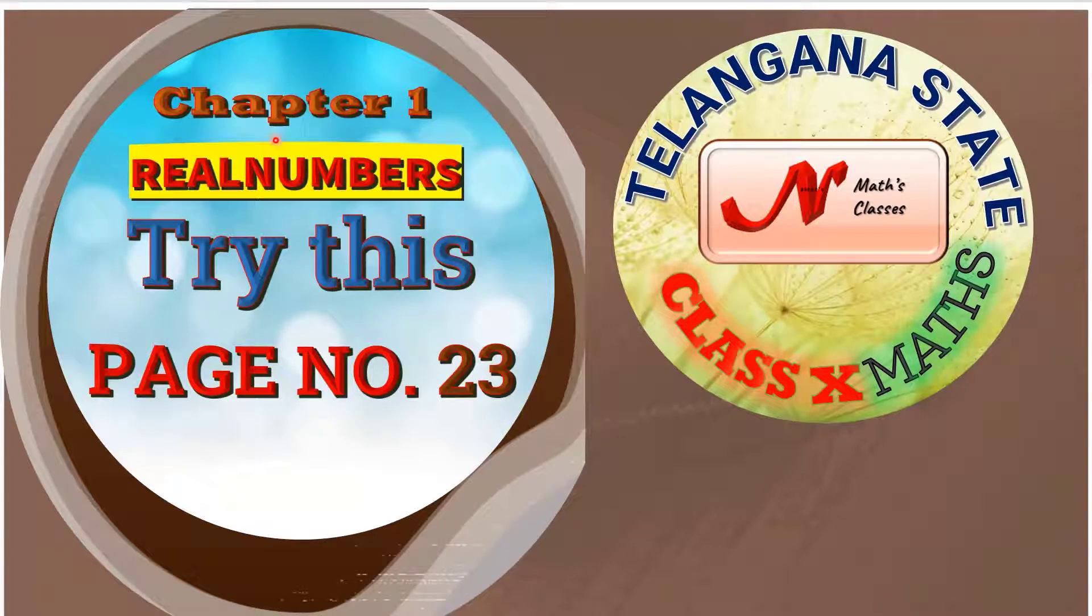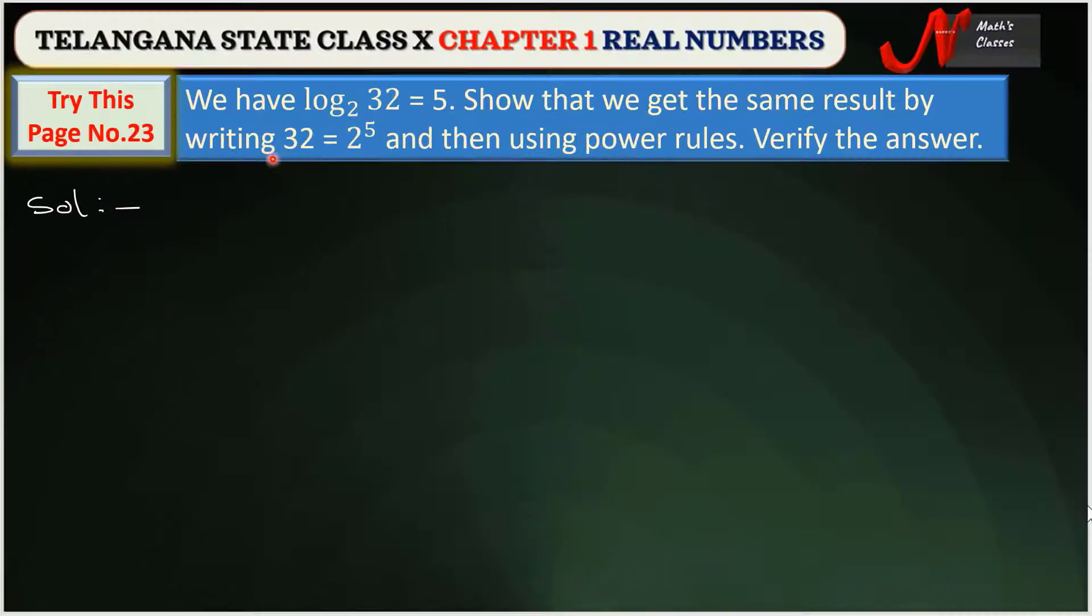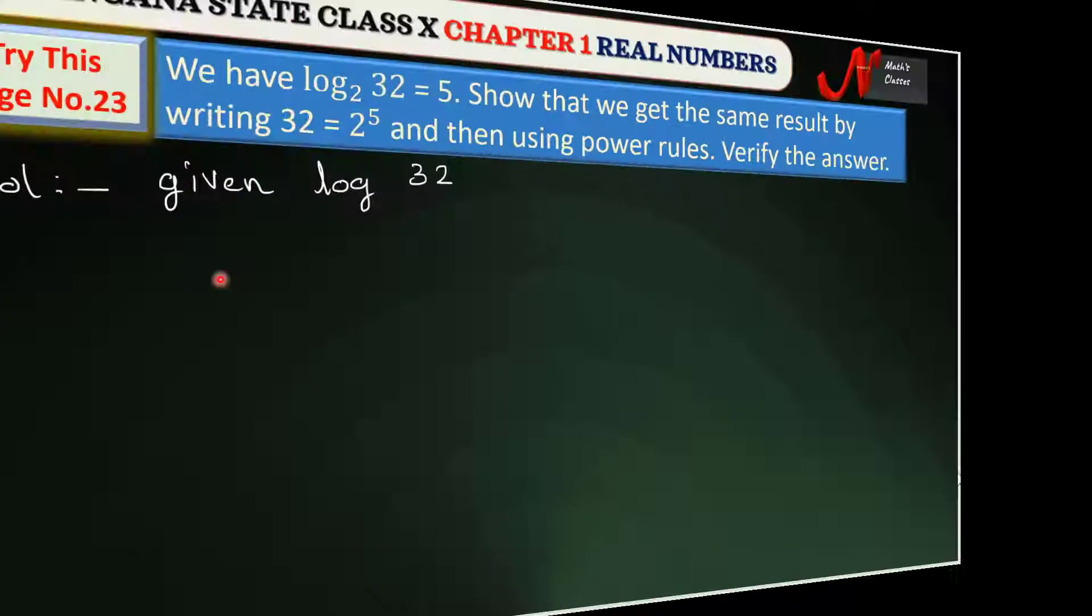In this video, we are going to solve Chapter 1 Real Numbers, page number 23. The problem states: We have log₂32 = 5. Show that we get the same result by writing 32 = 2⁵ and then using power rules. Verify the answer.